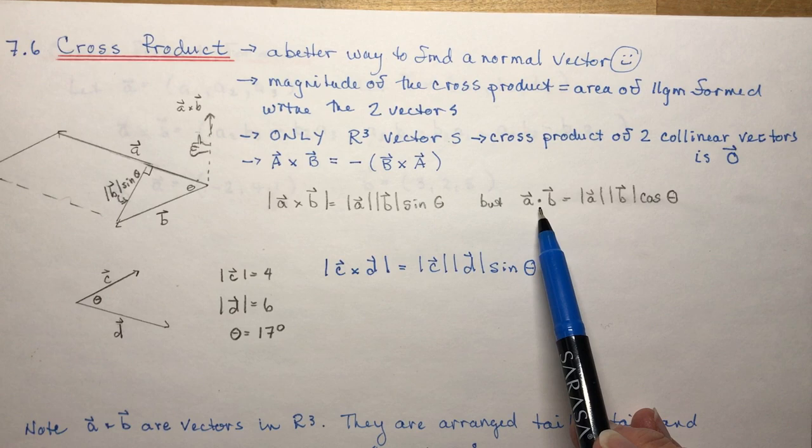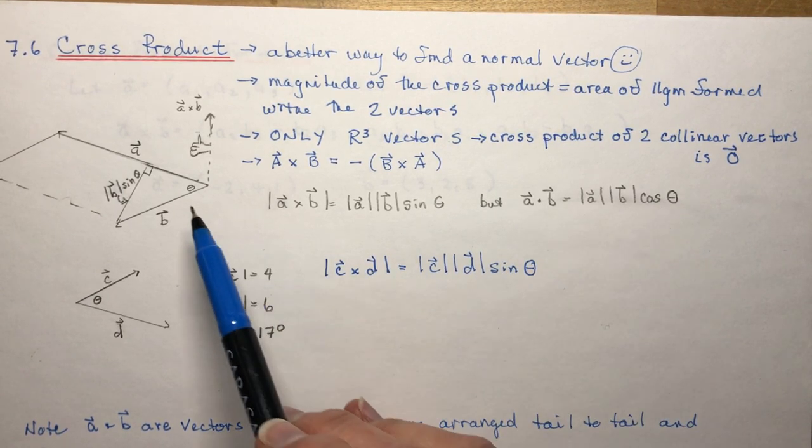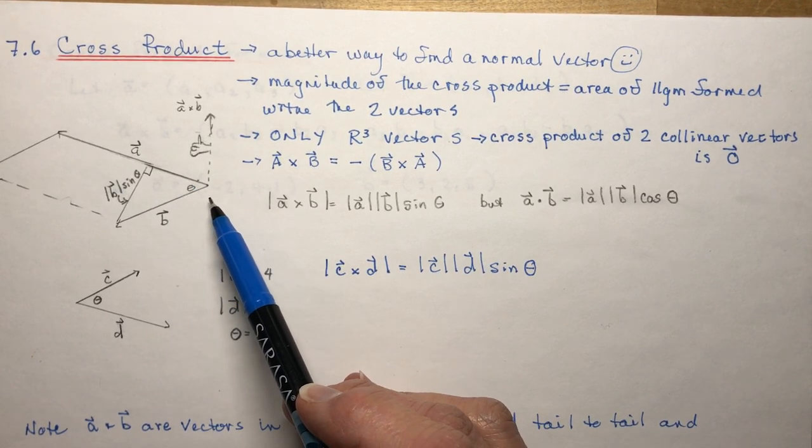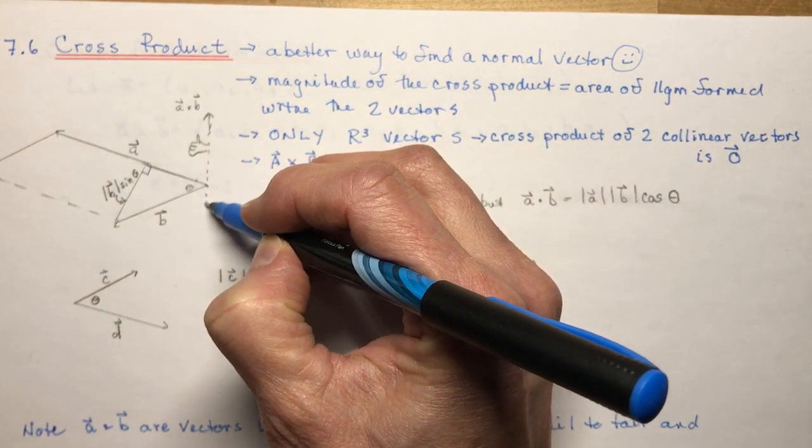Note the difference between that and the dot product which uses the cos. So the other thing that you have to know is whether or not your normal vector is coming out of the paper or if it's going down.